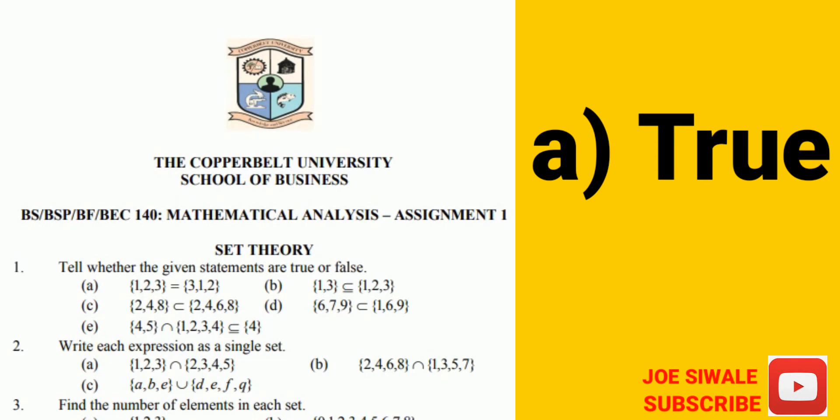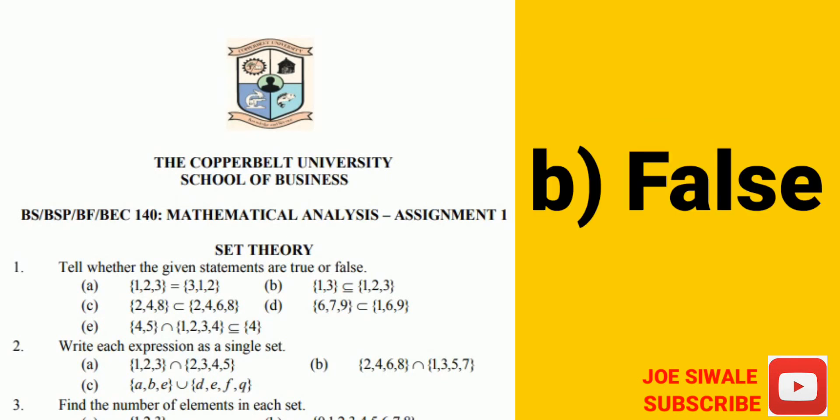Coming to question B, I have the first set which is {1, 3}. It's a subset of the second set which is {1, 2, 3}. And the answer here is false.